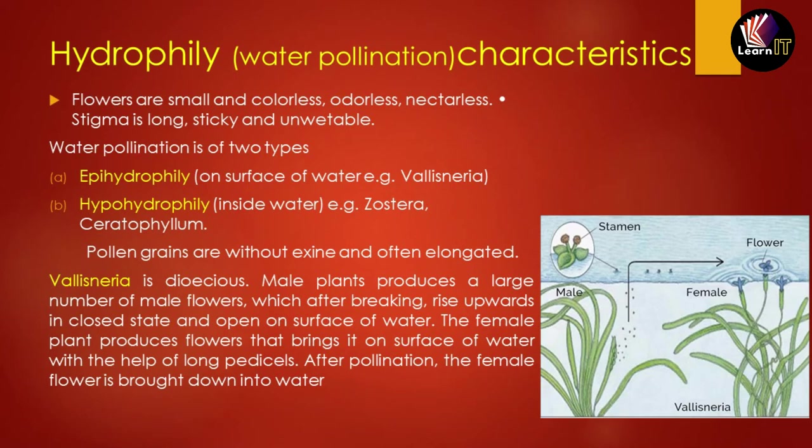The second type is hypohydrophily, which occurs inside the water — for example in Zostera and Ceratophyllum. The pollen grains are without exine and often elongated. In Vallisneria, which is dioecious, the male plant produces many male flowers that rise to the surface; the female plant produces flowers brought to the surface by long peduncles. After pollination, the female flower is pulled back into the water for fertilization.